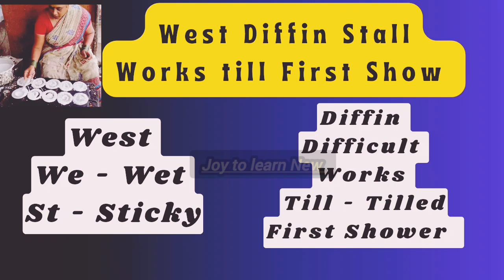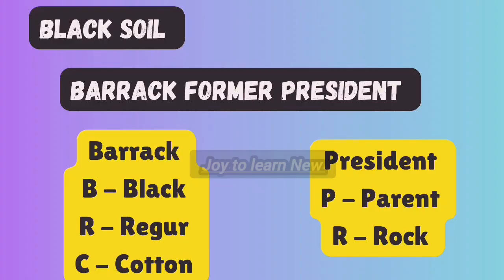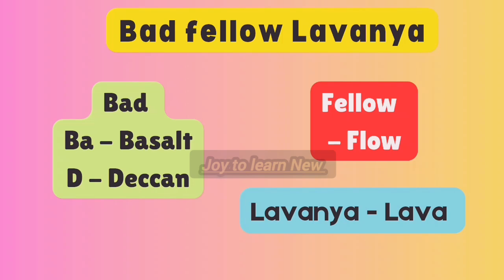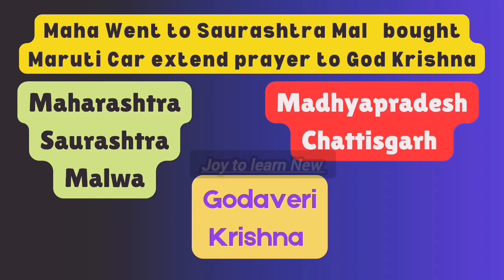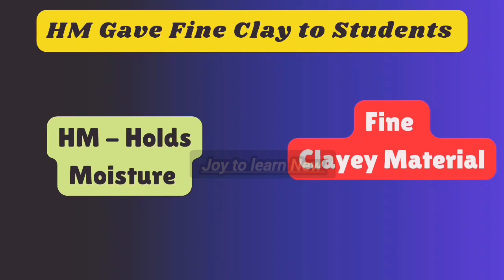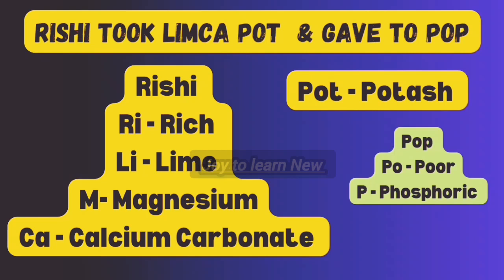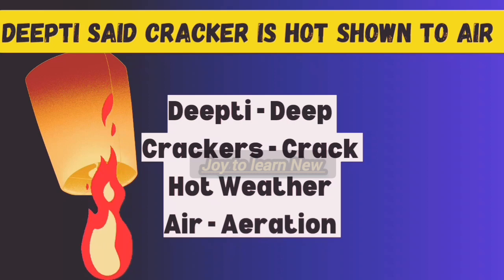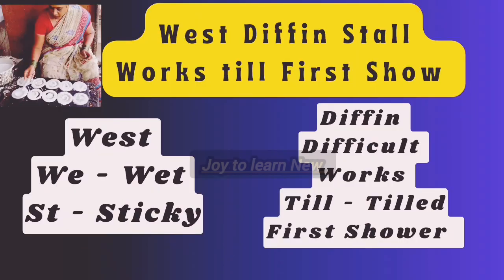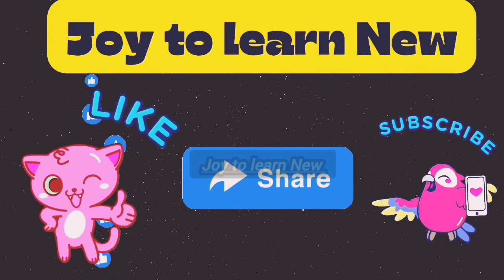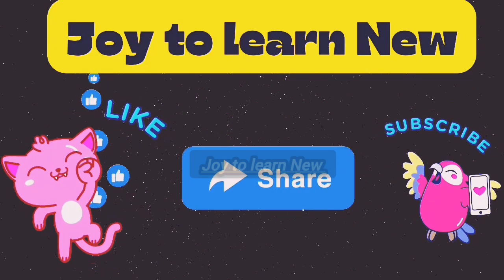Let's recap all the shortcuts: Barak Obama former president; Bad Fellow Lavanya; Maha went to Saurashtra Mall, bought Maratikar and extended prayer to God Krishna; HM gave fine clay to students; Rishi took Limca pot and gave to Pop; Deepthi said cracker is hot when shown to air; West Tiffin stall works till first show. These shortcuts will help you in your board exam — make note of them and study thoroughly. I hope this video is helpful. Kindly subscribe and support us. Thanks for watching till the end.